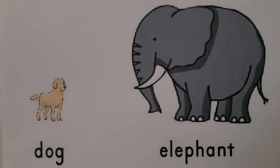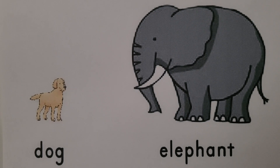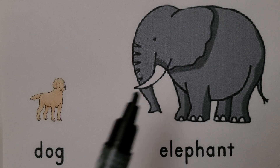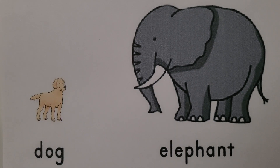But how are they different? Elephants are very large and dogs are not as large as elephants. Dogs can live in your house, but you can't have an elephant live in your house. Dogs eat meat and elephants don't eat meat. And elephants have tusks — dogs don't have tusks. So we can sort shapes into sets of how they're alike and how they're different.